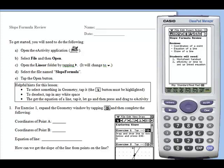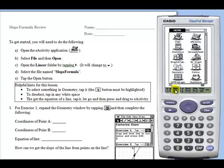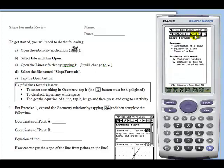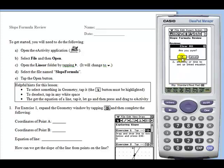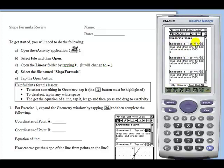To begin the activity, students will open the eActivity application, select File, Open, expand the Linear folder, select Slope Formula, and then expand the geometry strip for Exercise 1.